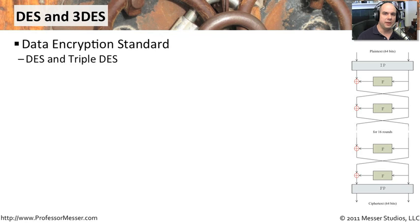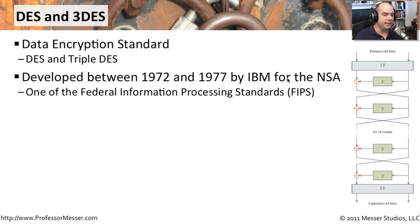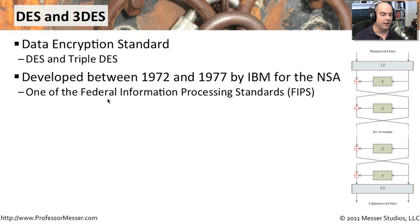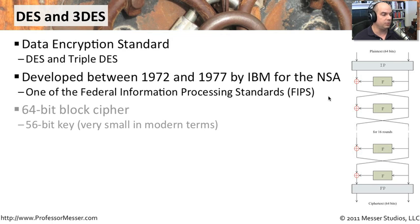Another common set of symmetric key ciphers is both DES and Triple DES. You'll occasionally see Triple DES abbreviated as 3DES. This stands for the Data Encryption Standard. It was created between 1972 and 1977, specifically for the National Security Agency in the United States by IBM. It became part of what they call the FIPS standard — the Federal Information Processing Standards. You still see it around today, perhaps not the DES part, but certainly the Triple DES part.